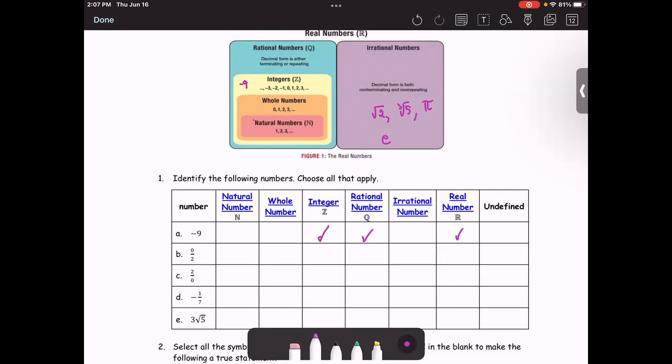In part B, given the number 0 over 2, or exactly 0, 0 is not natural, but 0 is the whole number. If it is a whole number, it is an integer. If it is an integer, it's also rational. The rational number is always a real number.